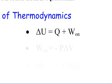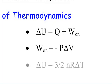We have a second equation which defines the work done on the system: W equals negative P delta V, where P is pressure and delta V is the change in volume. Our last equation is delta U equals three-halves NR delta T, where delta U is the change in internal energy.